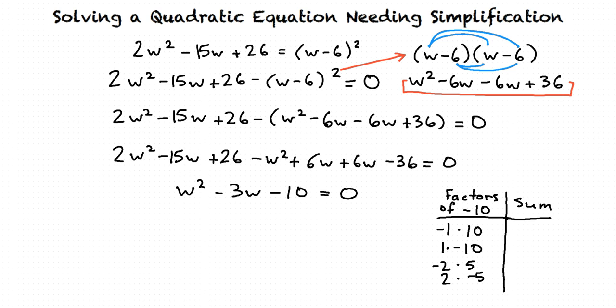The sum of negative 1 and 10 is 9, so that does not work. The sum of 1 and negative 10 is negative 9, so that also doesn't work.